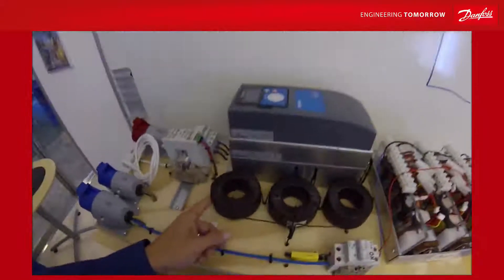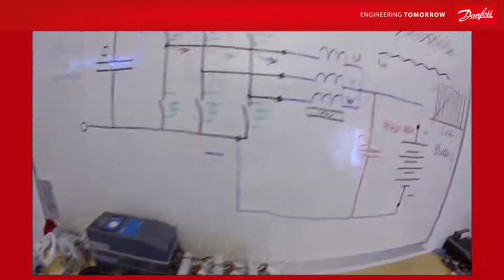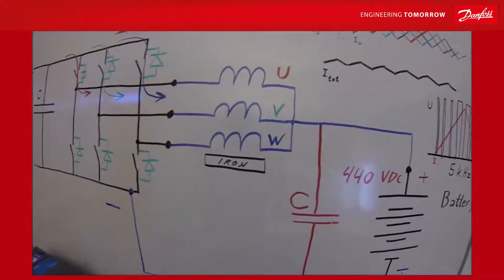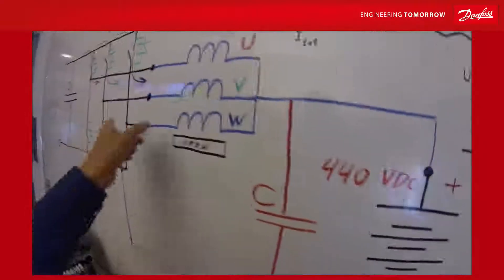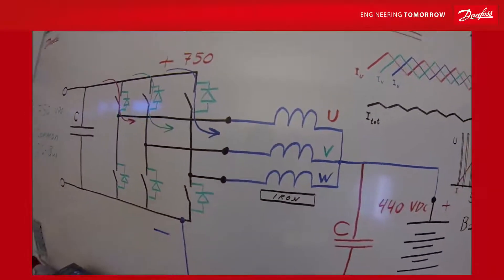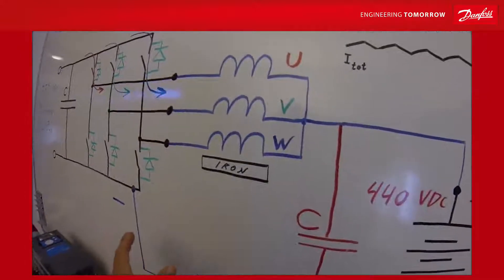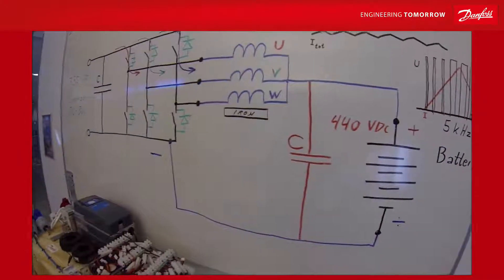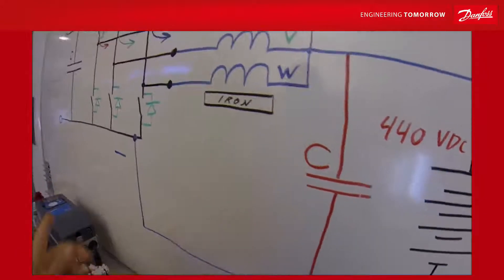Dimensioning the chokes are done individually for each and every project by Danfoss and Vacon specialists. The reason why there is a need for customization is that the voltage window for the battery and also the current requirement can be quite different from each project. The need for DC boosting can be different. Also, the ripple requirement for the battery could be quite different. So the need for the capacitor is also part of the dimensioning.